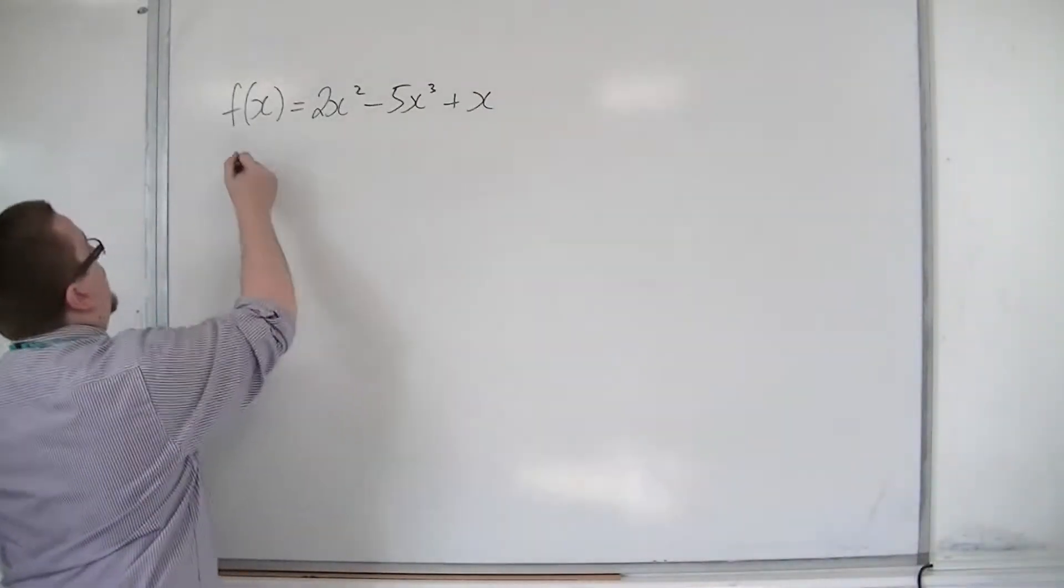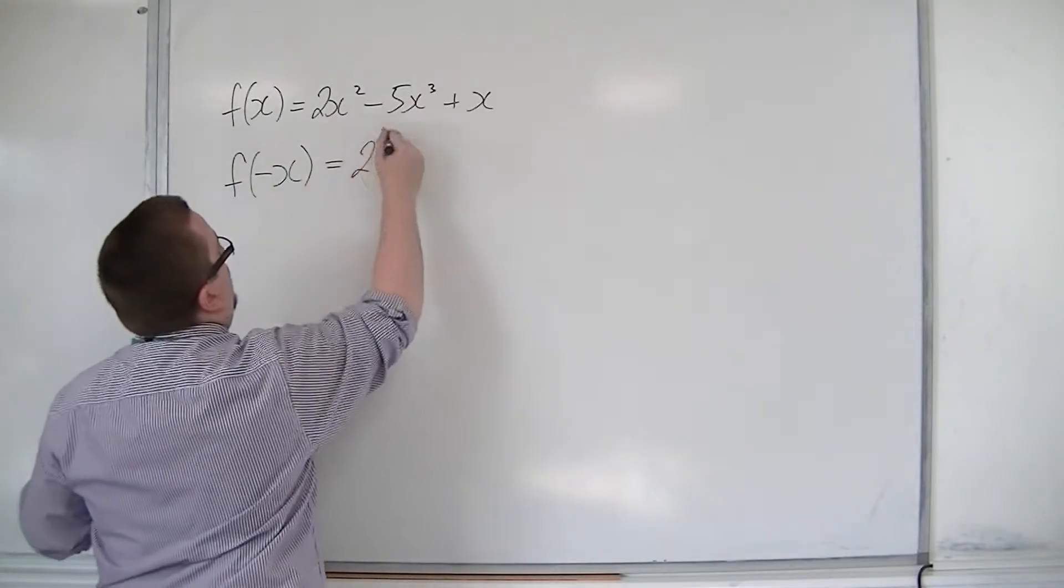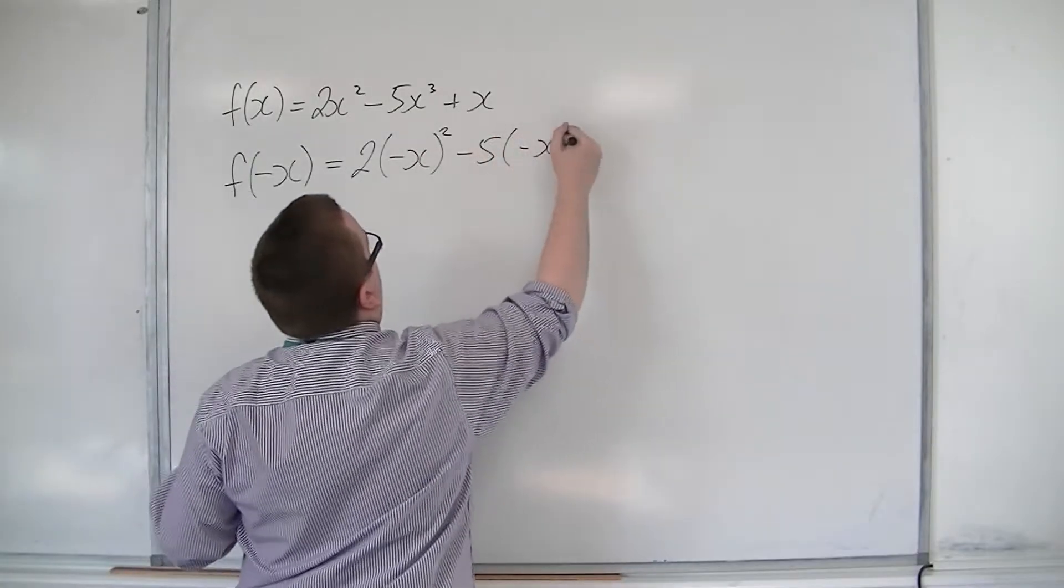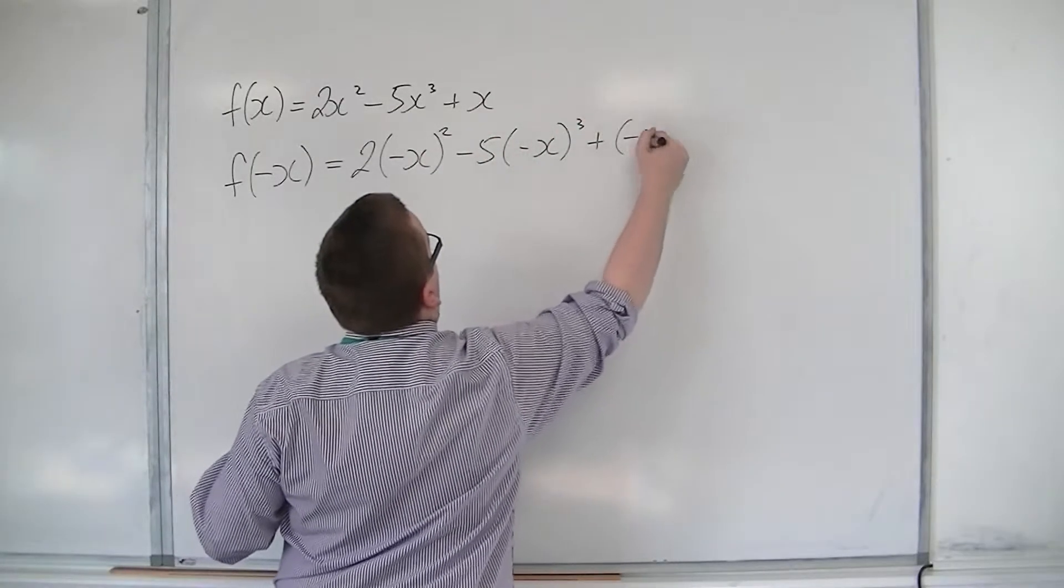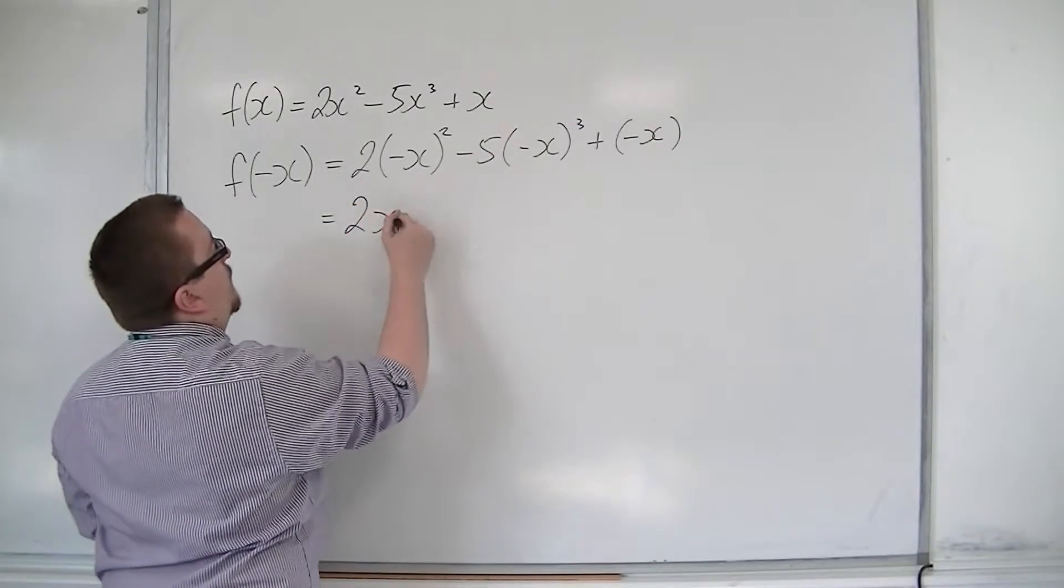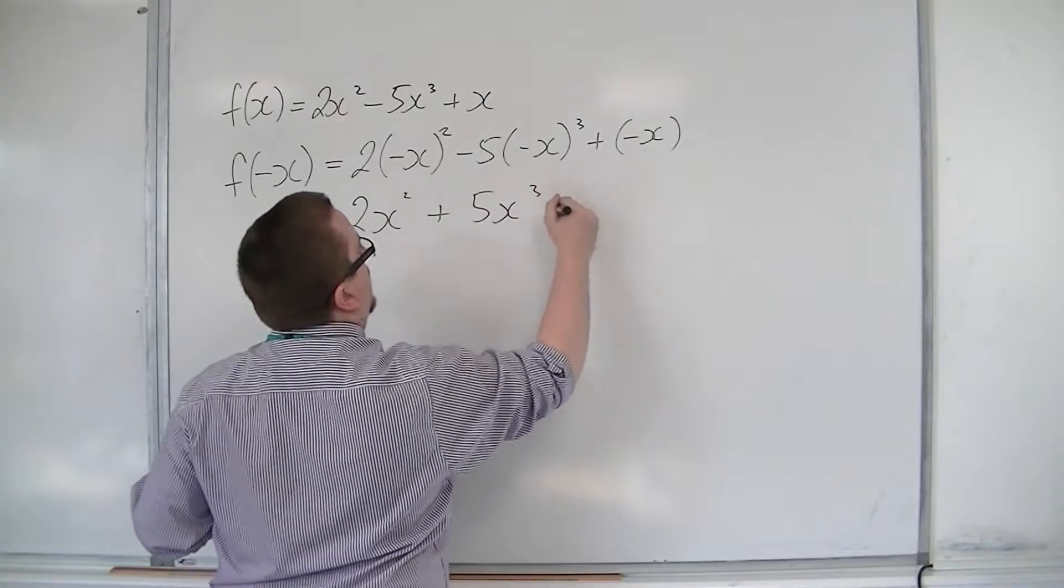If I substitute in minus x, then I get 2 lots of minus x squared, take away 5 lots of minus x cubed, plus minus x. So this will be 2x squared plus 5x cubed minus x.